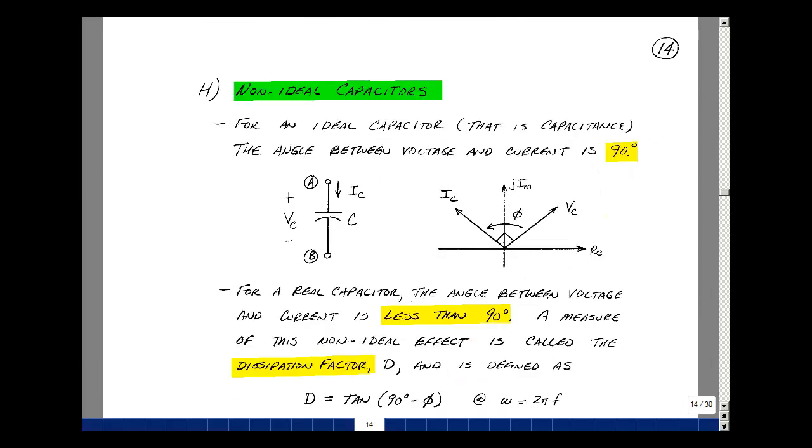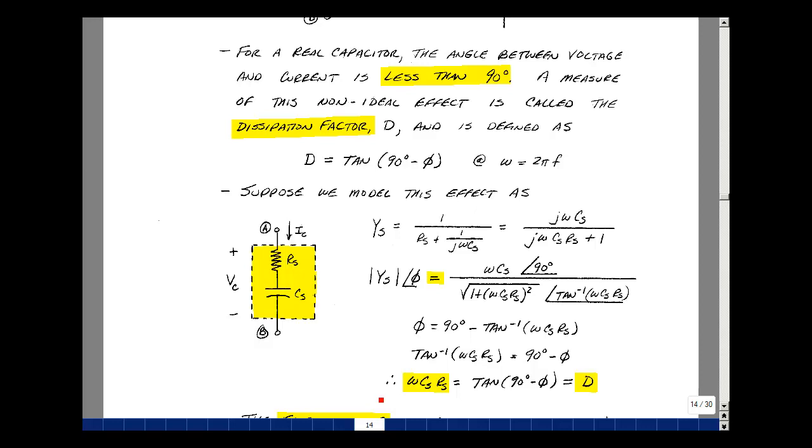When designing active filters with Q-naughts around 10 or more, the non-ideal capacitor can sometimes wreak havoc in the filter performance. Let's go back to our discussion of an ideal capacitor we did in ECE 202, where the angle between the voltage and current is 90 degrees. Here's our voltage across our capacitor and the current going through it. Again, these are phasors, and the current leads the voltage by 90 degrees. Now for a real capacitor, the angle between voltage and current is actually less than 90 degrees. A measure of this non-ideal effect is called a dissipation factor. We could model that with a real part added to our imaginary part. We could do that with a series or parallel element. Let's do a series element. I'll call it r sub s in series with c sub s.